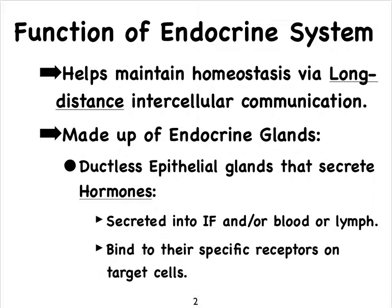Both the nervous system and the endocrine system play a very important role in communication between cells in the body, but the endocrine system really allows for long-distance intercellular communication. The endocrine system is made up of endocrine glands, which are always ductless, and they secrete hormones. These hormones are typically secreted into our blood or even into the lymph, sometimes just into the interstitial fluid surrounding the cells. Each one of these hormones, just like the neurotransmitters of the nervous system, have very specific receptors, located on cells we refer to as target cells, or on target organs.